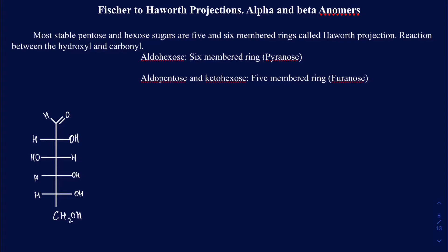In this video, we're going to be learning how to convert a Fischer projection to a Haworth projection. Fischer projections are your open chain projections, and the Haworth projection is going to be the cyclic form of the sugars. In an aqueous solution, you only have a trace amount of open chain or Fischer projections. For the most part, the sugar is going to exist in the cyclic form. We're going to learn how to convert the open to the cyclic form, and then we'll talk about what an alpha and a beta anomer is.